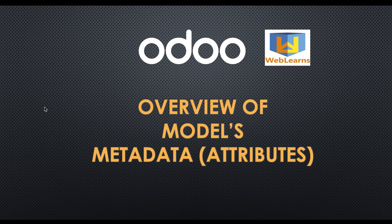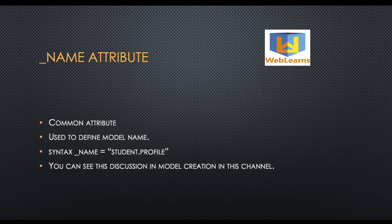The first attribute is the underscore name attribute. This is a very common attribute used to define the model name, like underscore name equal to and then the model name. For more information about this attribute, you can see the previous discussion about how to create a model.